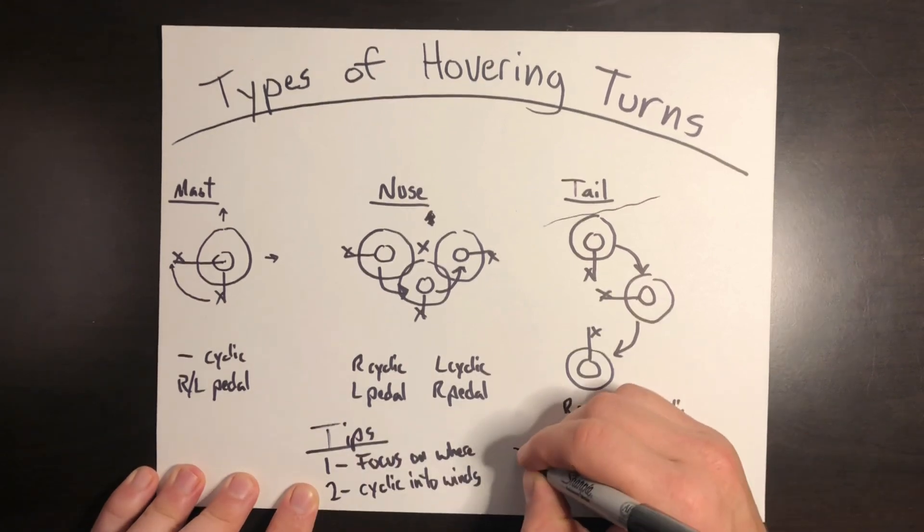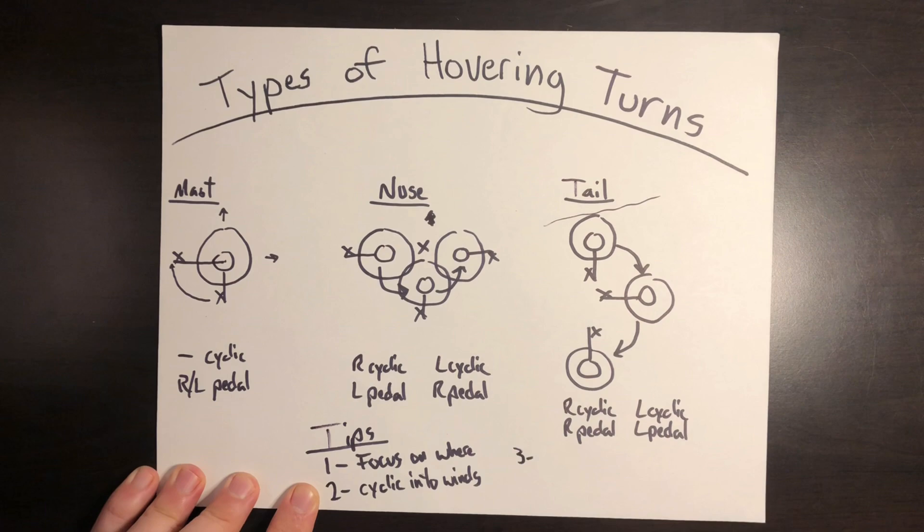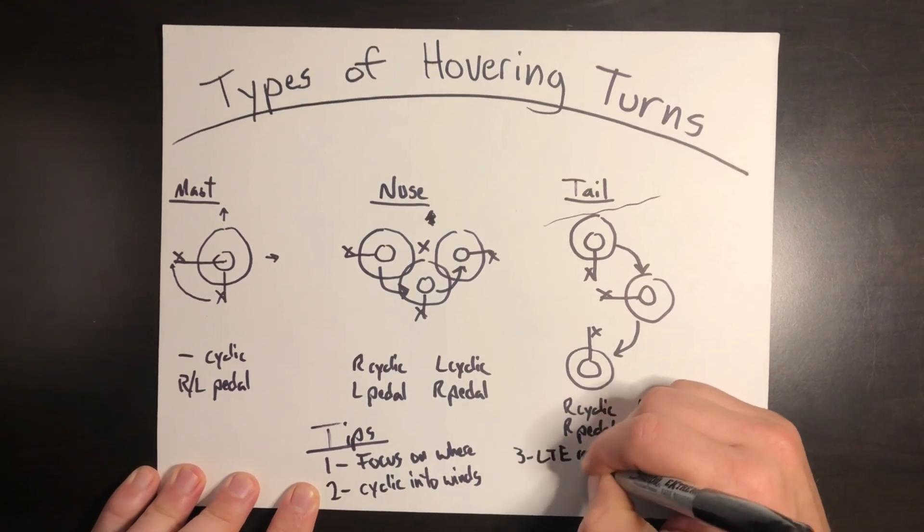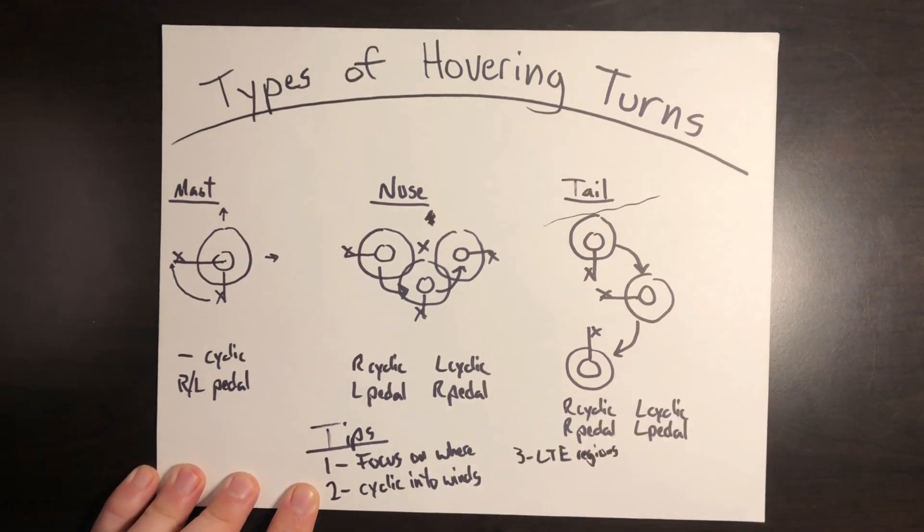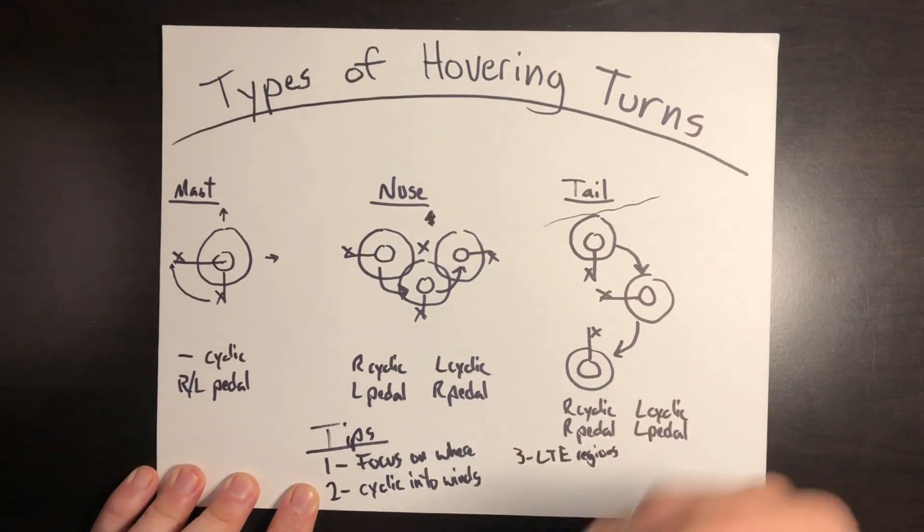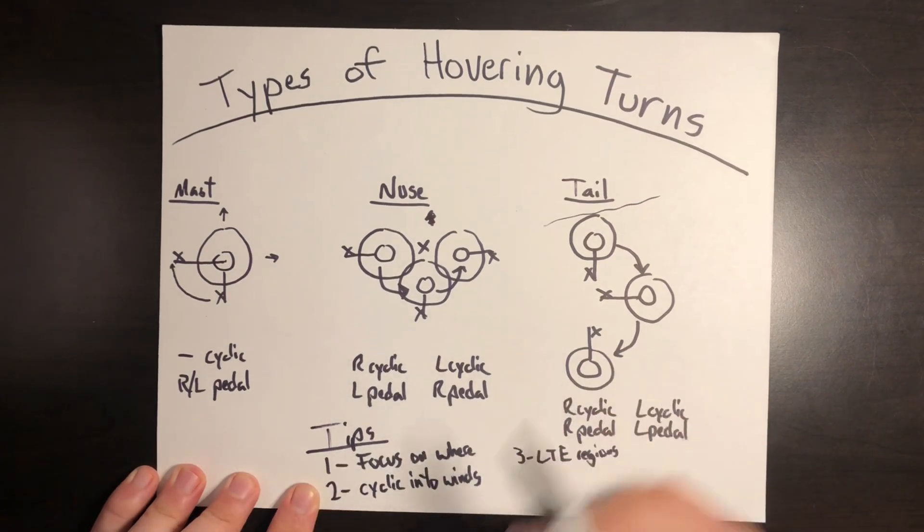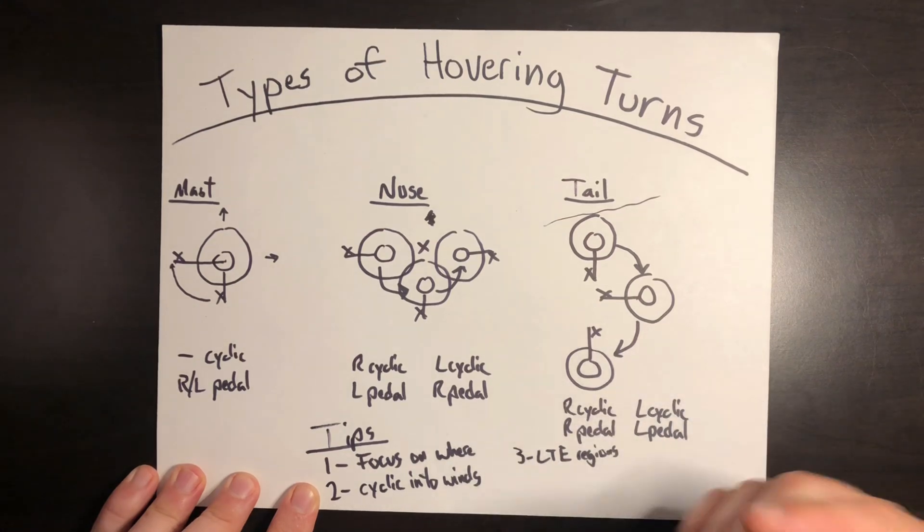Third is watch out for the LTE regions. If I'm doing any kind of pedal turns, especially if I'm OGE, out of ground effect, or near my max torque available, I need to be cognizant of where the wind is so I don't get into a loss of tail rotor effectiveness. That's an uncontrolled spin that doesn't stop. If you're unfamiliar with loss of tail rotor effectiveness, I've got a whole video on it. I'll put a link in the description as well as above.